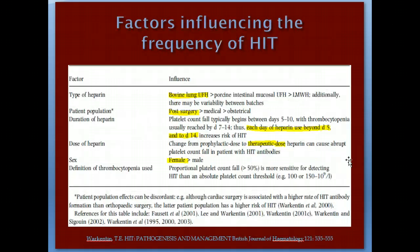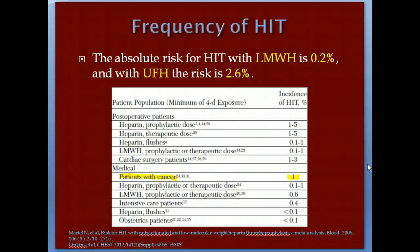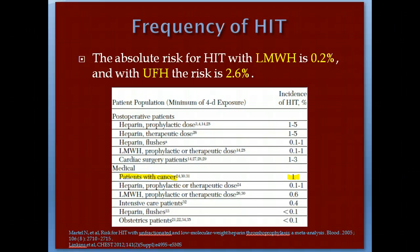Factors influencing the frequency of HIT: the type of heparin plays a major role — bovine heparin more than others, and low molecular weight heparin is the least likely. The size of the heparin molecule is a major factor. Surgical patients are more prone than medical patients; obstetric patients have the lowest risk. Longer exposure, therapeutic doses versus prophylactic doses, and female sex also increase risk. The absolute risk for HIT with LMWH is 0.2% versus 2.6% with unfractionated heparin. Cancer patients have around 1% risk, and even flushes alone can cause HIT.